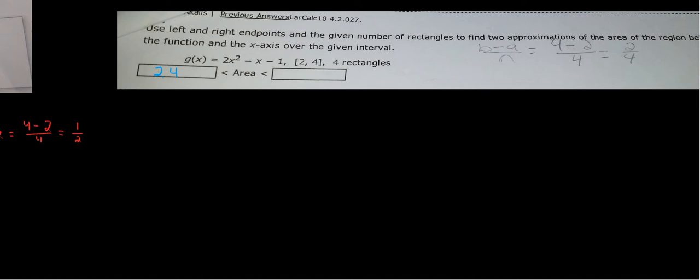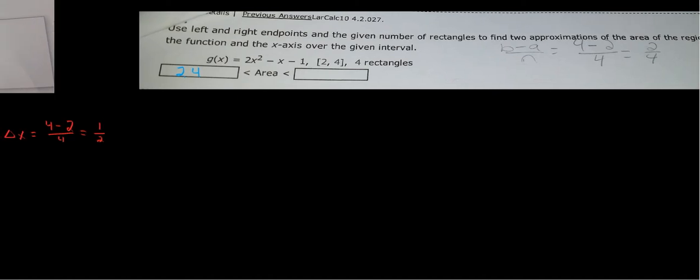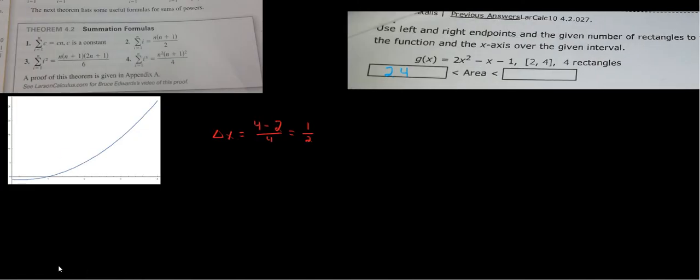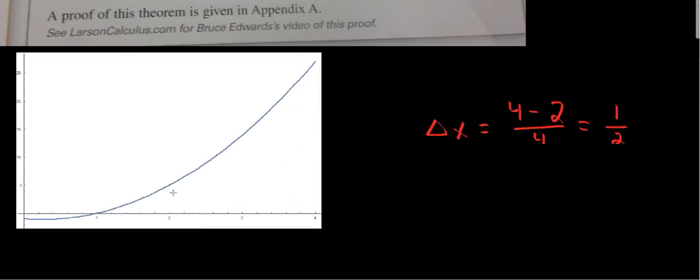So if we do a right endpoint approximation, that means our right endpoint approximation should actually be greater than the actual area. It should be larger than the actual area. And let's see what that's going to look like.